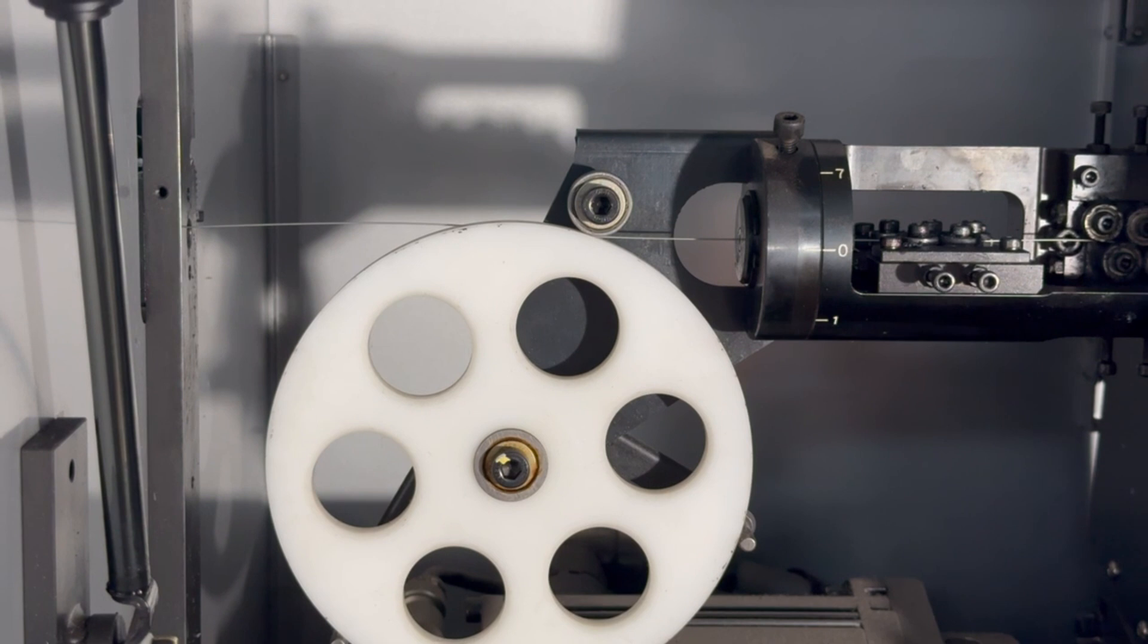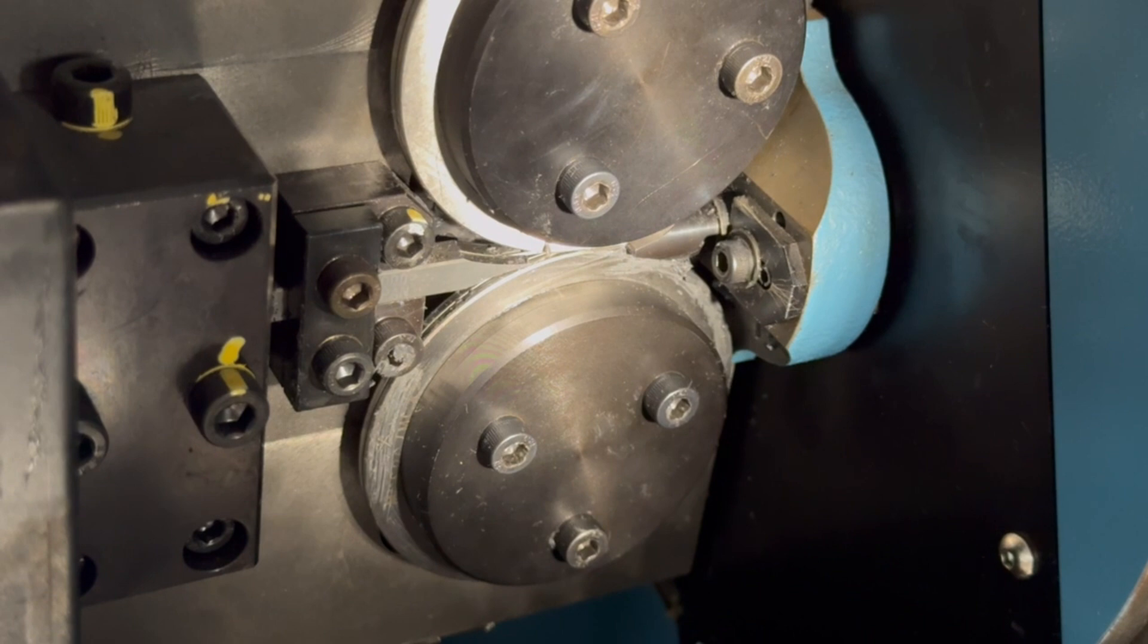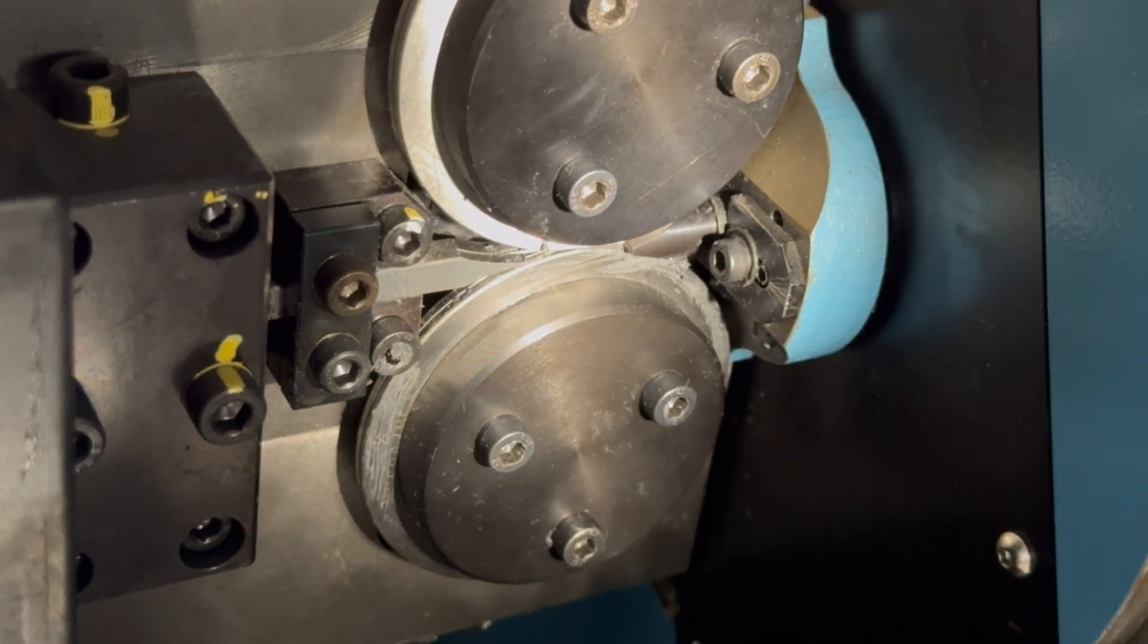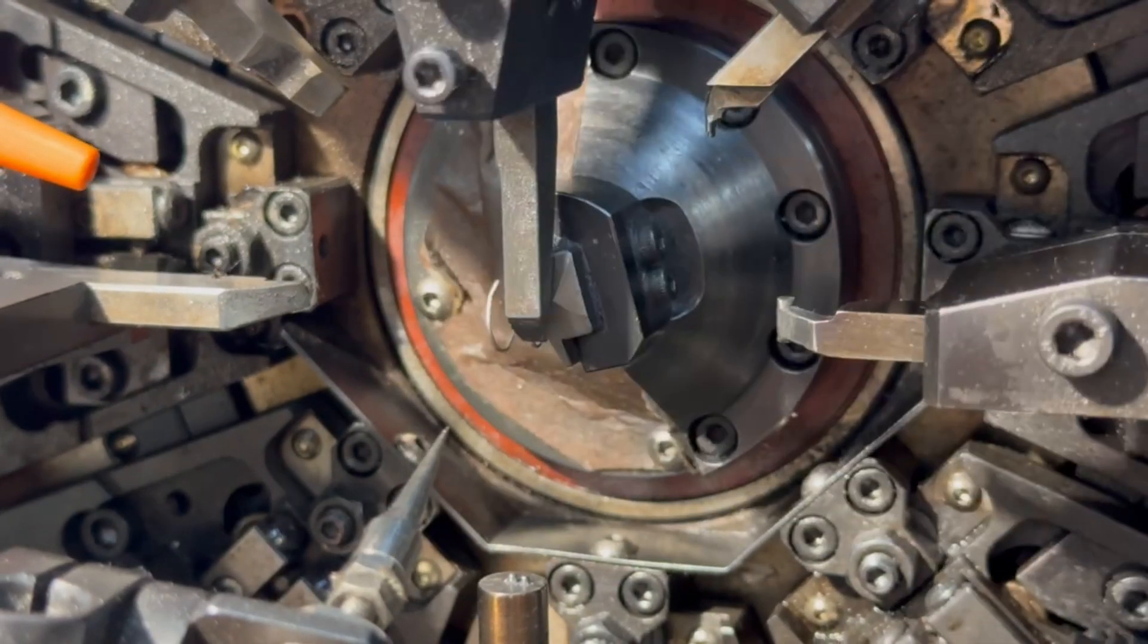The wire is first wound around the cast wheel and across a set of wire straighteners. From there, it is directed through an initial and final wire guide. Now we can come to the front of the machine and begin coiling the torsion spring.